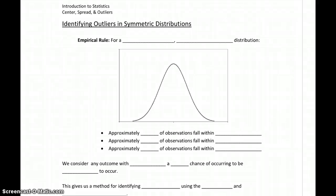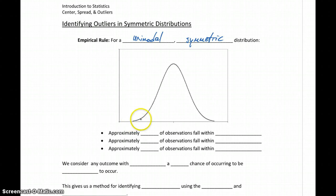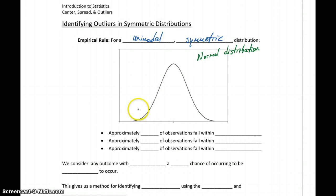Before we talk about identifying outliers for symmetric distributions, the first thing we need to introduce is the empirical rule. For a unimodal symmetric distribution that looks something like this curve, which if you've seen something like this before, you probably know we're talking about the normal distribution, sometimes called the bell curve.